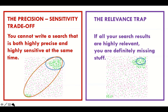There's also the relevance trap: if all your results are highly relevant, you're in trouble because you're definitely missing stuff. So it's really important to keep that in mind. With knowledge synthesis, a bigger ellipse is always better — the wider circle is better than a very tight little ellipse.